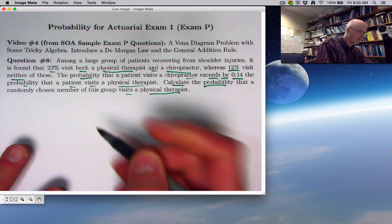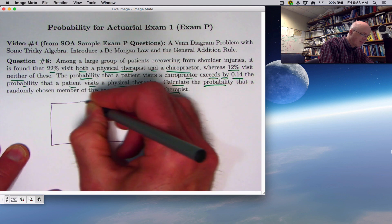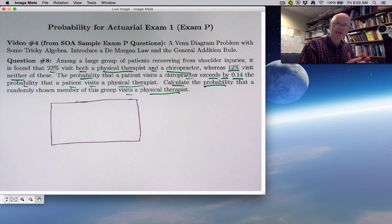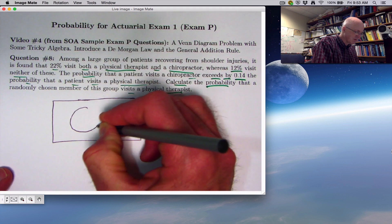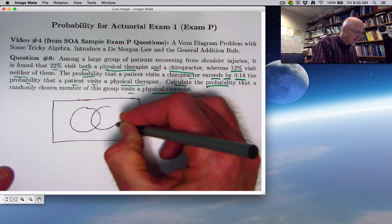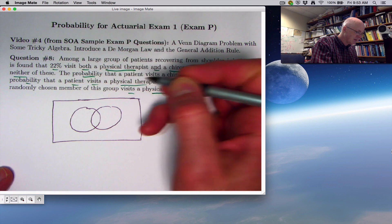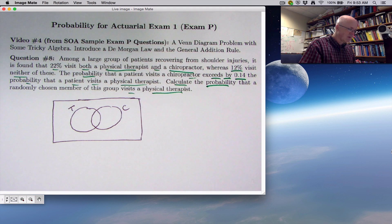Let's draw our Venn diagram and solve the problem as quickly as possible, with as little work as possible. It's good to not worry with simple problems like this about being too formal with our symbolism. We've got our box representing the sample space, all patients, all people in this large group that are recovering from shoulder injuries. Let's let this circle represent the people who visit a physical therapist, T for therapist, and this circle represent people who visit a chiropractor.